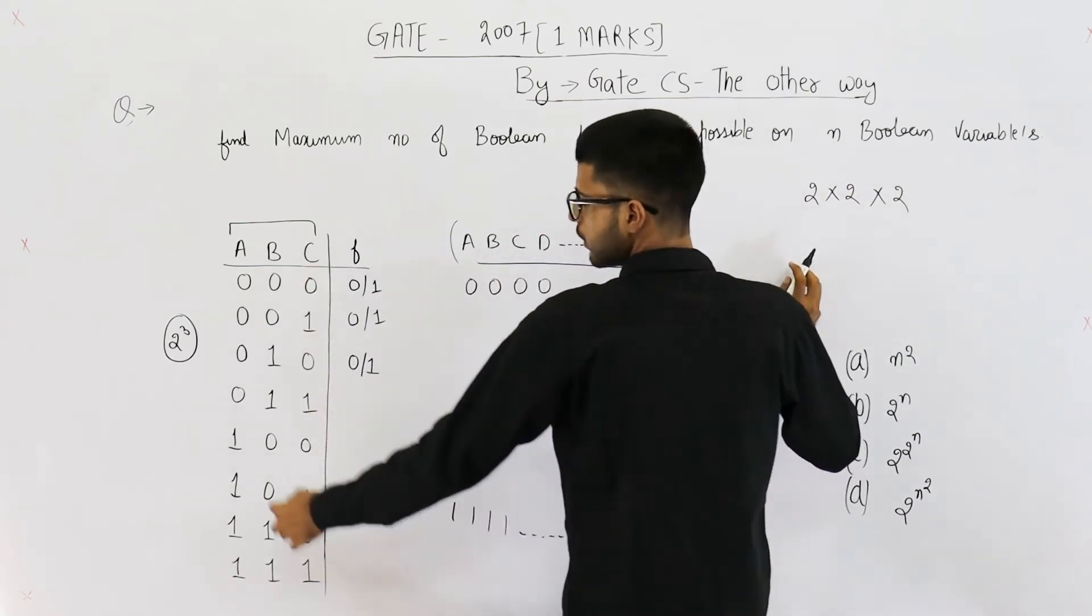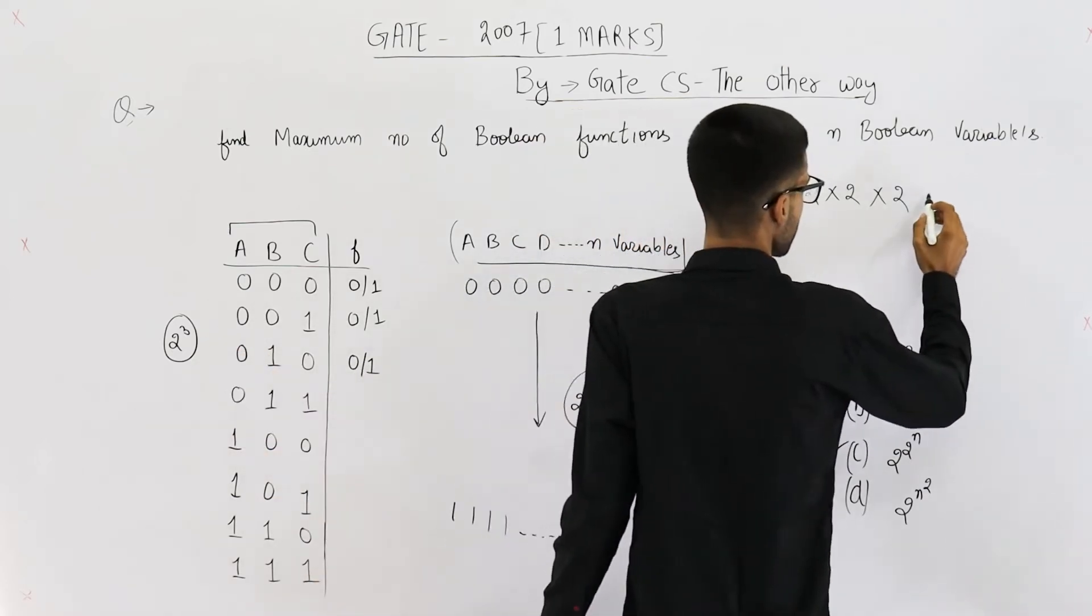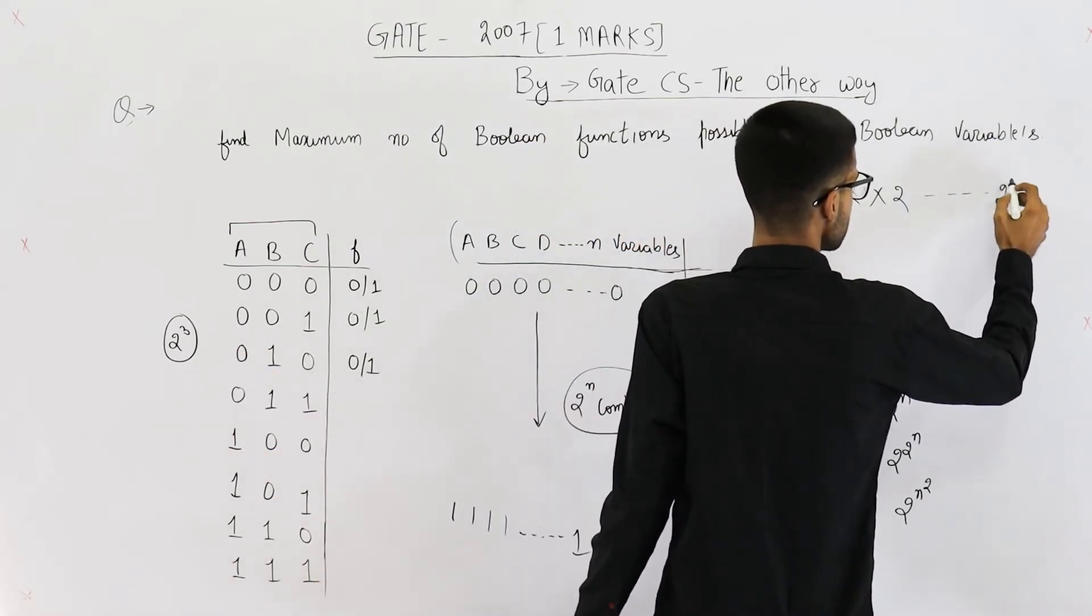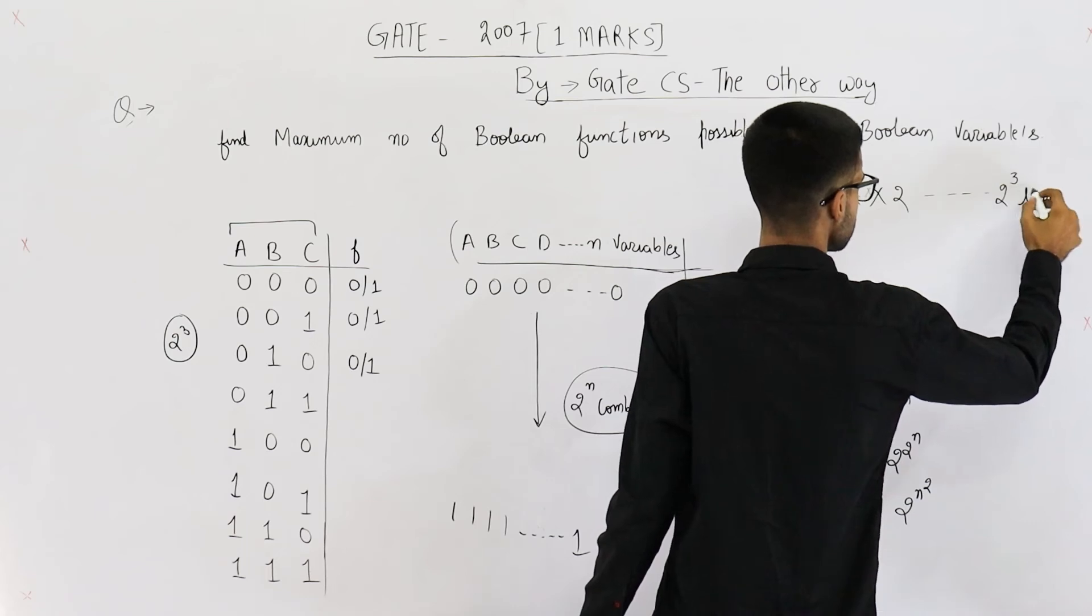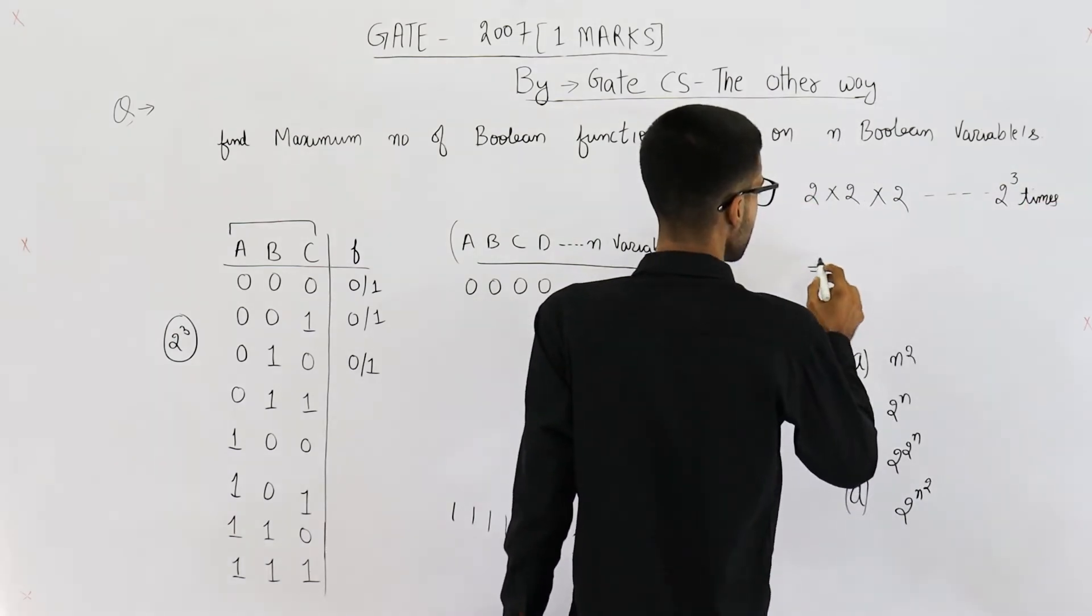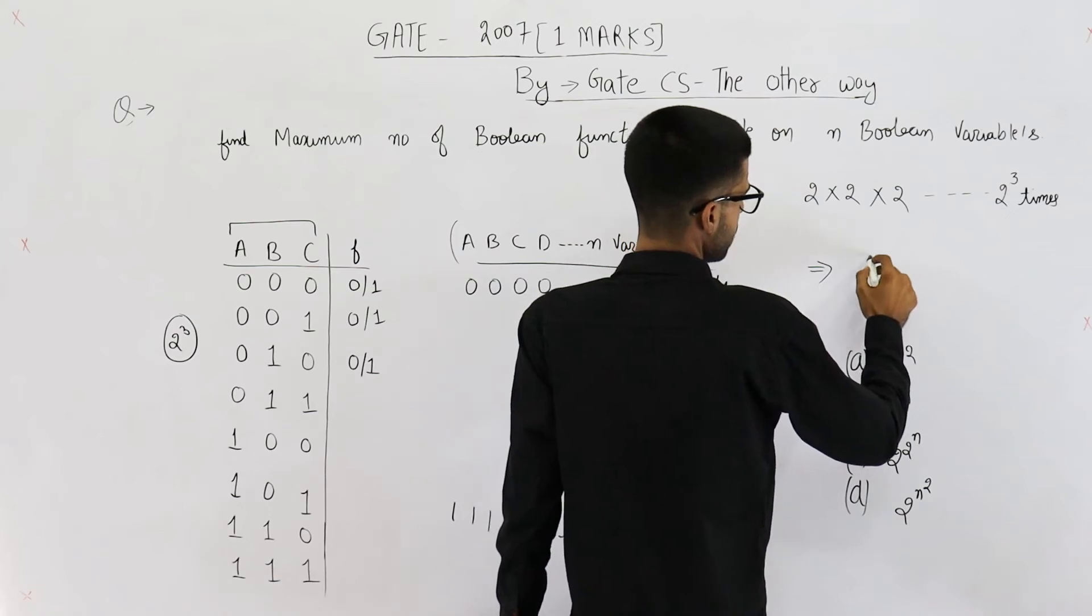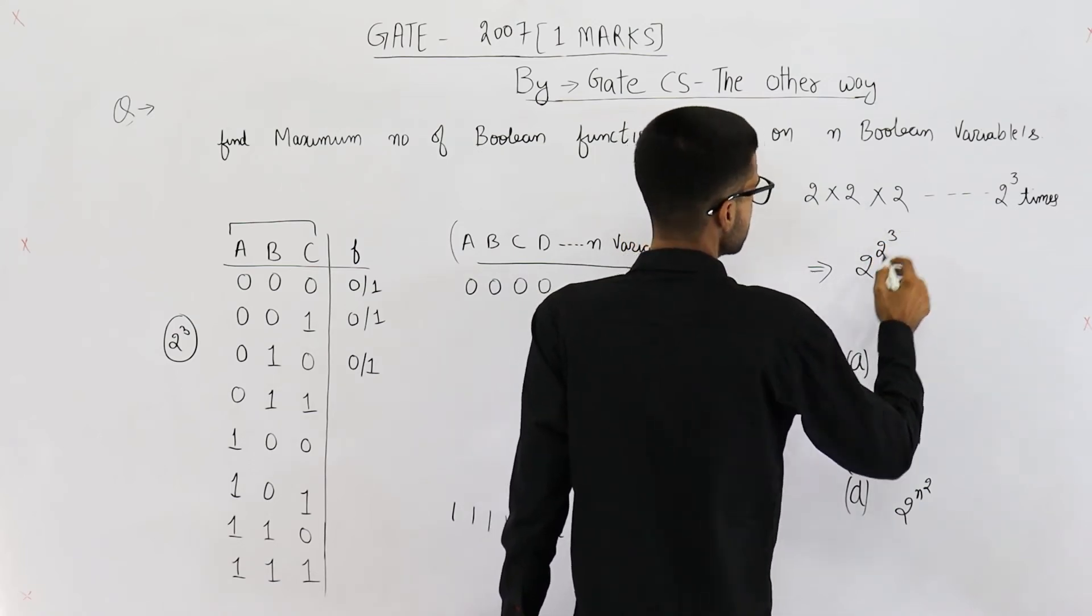How many are they in number? They are 2 raised to the power 3. 2 raised to the power 3 times. So the total number will be 2 raised to the power 2 raised to the power 3.